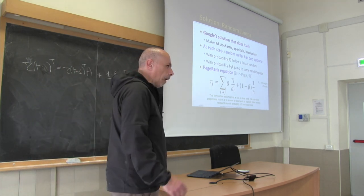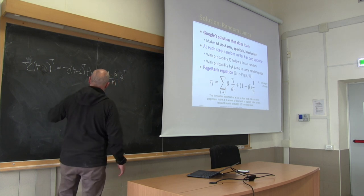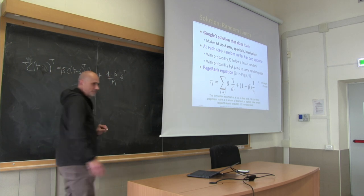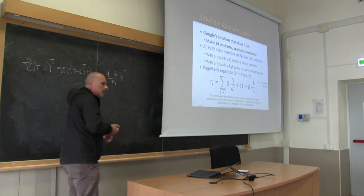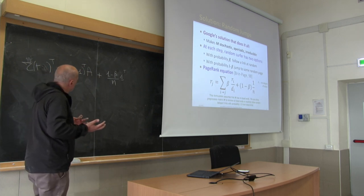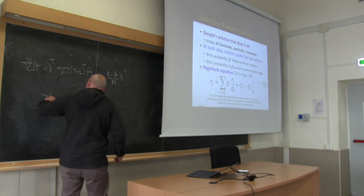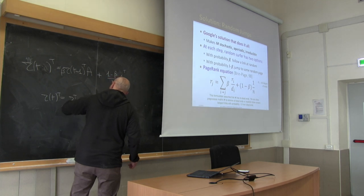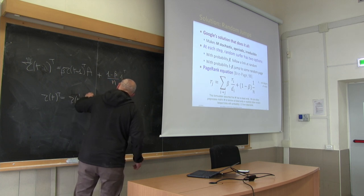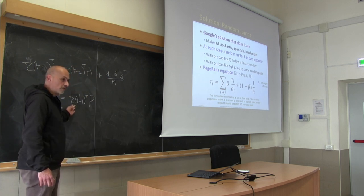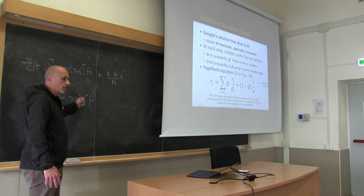So are we happy with this? More or less — there is something missing: a beta factor. Now we are happy. Can we say this is a power method applied to matrix P? The power method is something like r(t) = P^t r(0). This is a matrix. If I know something about the spectrum — the eigenvalues — I can say whether or not this is going to converge.